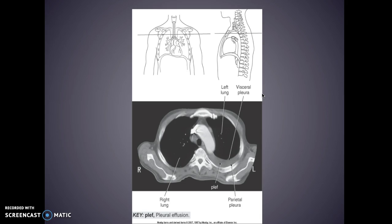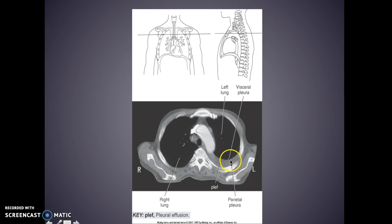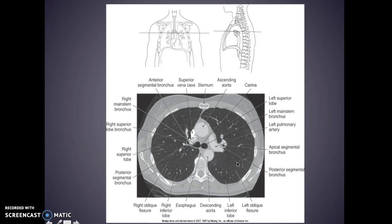This is real simple: this is your left lung, this is your visceral pleura, and then you can see your parietal pleura with the pleural effusion. Okay — sternum, this is your ascending aorta with your carina, with your right and left main stem bronchus.